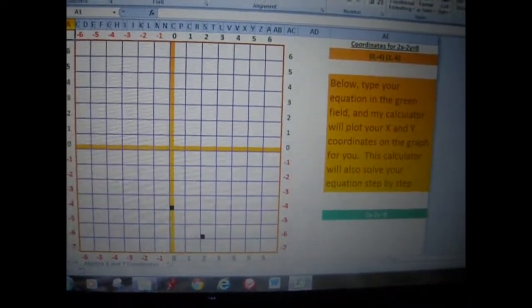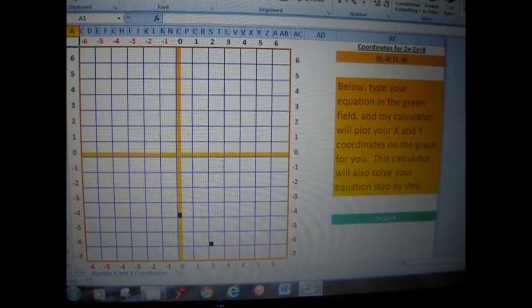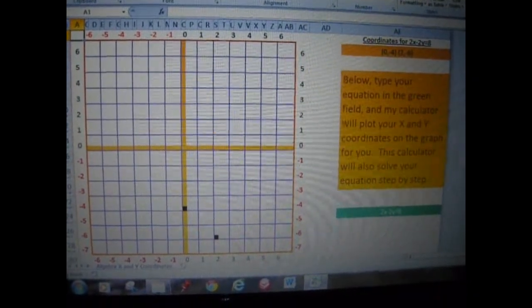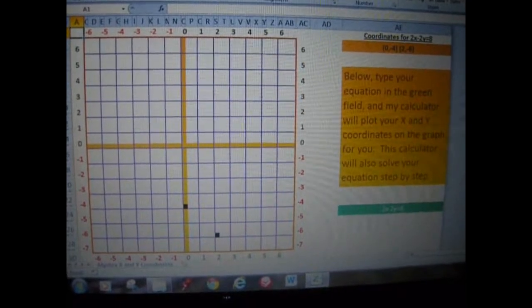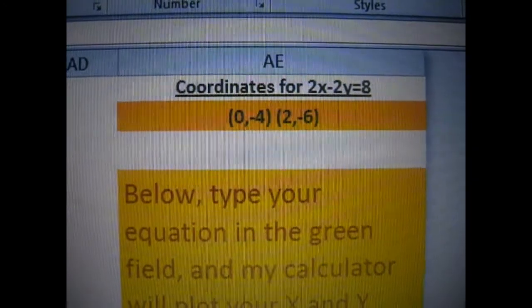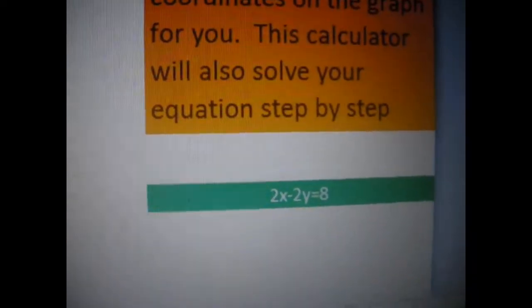The following creation is just like the previous x and y coordinate plotter, but this one, instead of manually entering up to six coordinates here, you enter an equation down here in the green, and it will do all the rest for you.